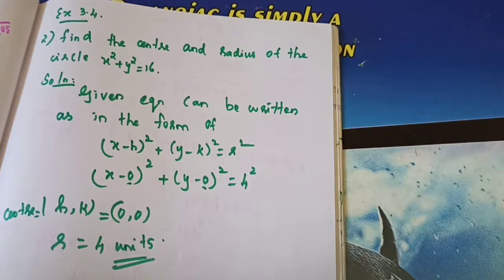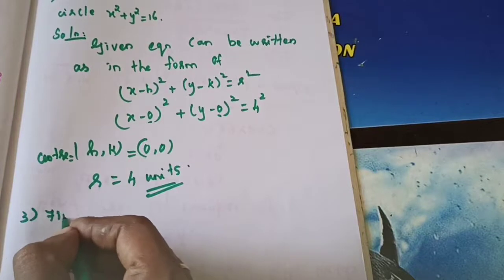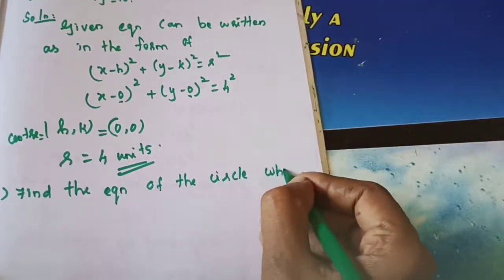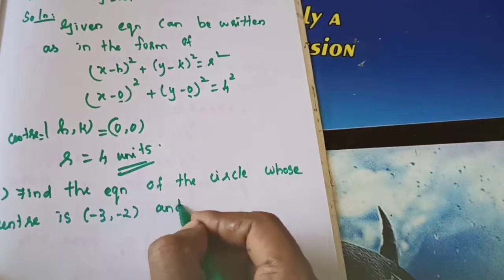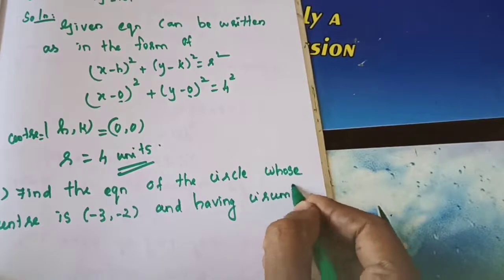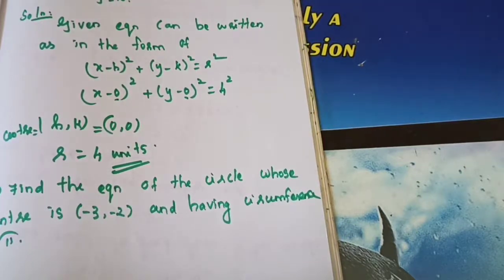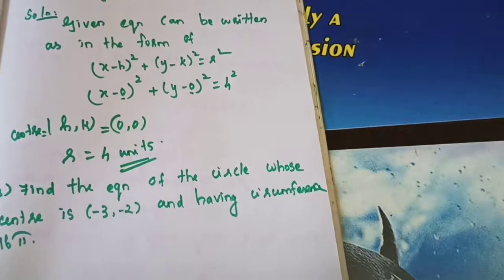Very easy. The given equation is slightly different, so I started to do it. I think the first section's two problems we have completed. Second section's first problem I have done now. Third and fourth I gave as homework. So the third problem we will do now. Find the equation of the circle. Center is (minus 3, minus 2) and the circumference is 16 pi. You know the circumference of a circle formula: 2 pi r. From that you can find the r value.